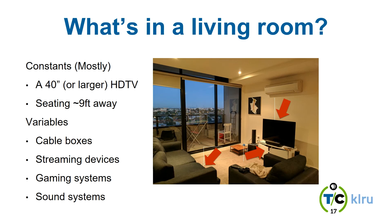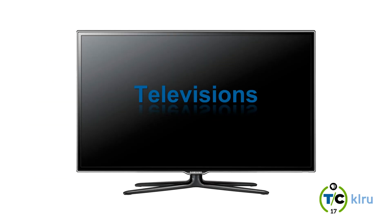There are also a bunch of variables in a living room: cable boxes, streaming devices, gaming systems, sound systems, all kinds of other stuff — in addition to those constants. So while there is a baseline we can target in people's living rooms, there's also a lot of variability once you get outside those baseline constants. Let's talk about the biggest technological baseline constant, which is the television.